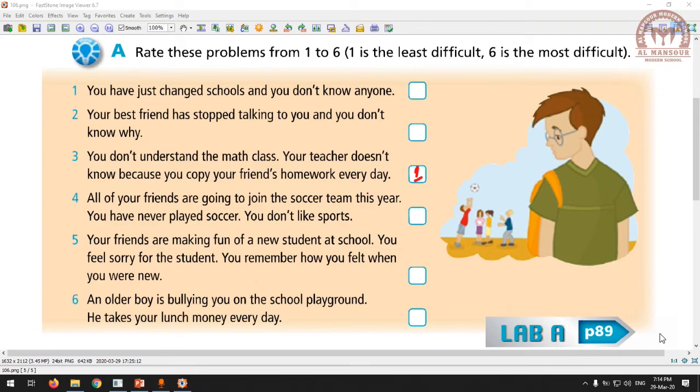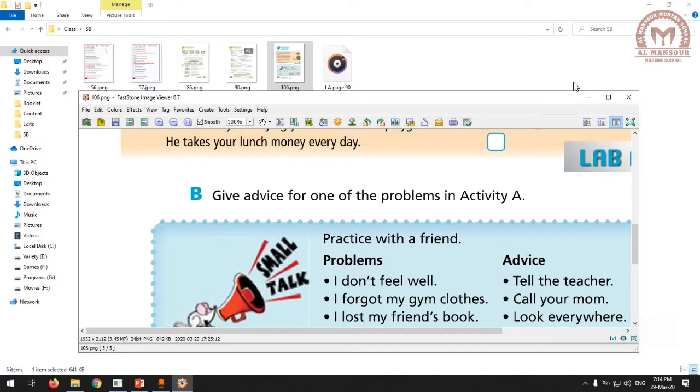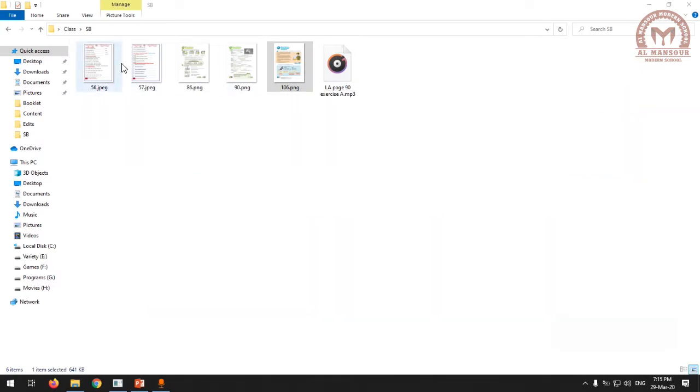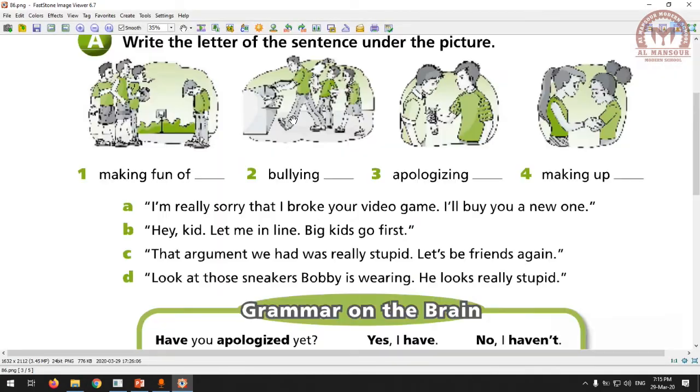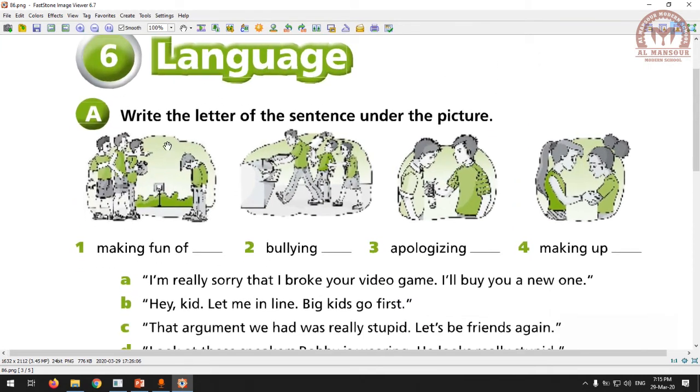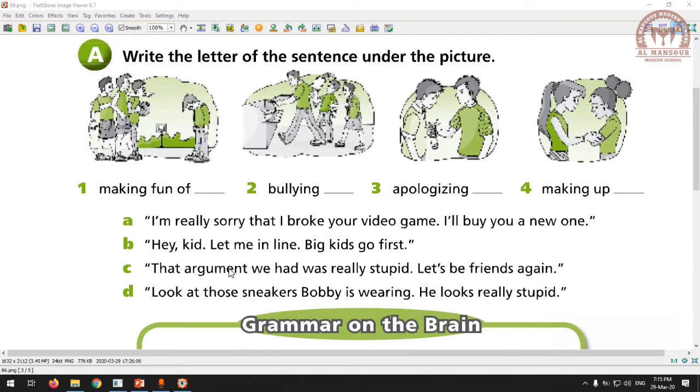Now I want you to open your language activity book on page 89. Write the letter of each sentence under the picture. I'm going to do one for you: I'm really sorry that I broke your video game, I'll buy you a new one. Which one of these pictures is this? This is called apologizing, so this is number A. You can finish the rest by yourself.